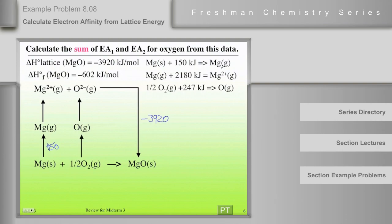The sum of the first two ionization energies for magnesium is written in the same way. You've got to put in 2180 kilojoules to convert magnesium all the way to magnesium 2 plus. And so that's 2180 here.